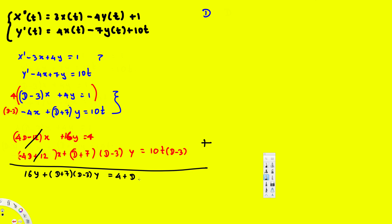Let's write (D minus 3) in front, so the right-hand side is (D minus 3) times 10t. Now expanding (D plus 7)(D minus 3): D times D is D squared, D times negative 3 is negative 3D, 7 times D is 7D, so combined that's 4D, and 7 times negative 3 is negative 21. So we get (D squared plus 4D minus 21)y. On the right, taking the derivative of 10t gives 10, and negative 3 times 10t gives negative 30t, so the right side is 4 plus 10 minus 30t.